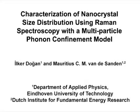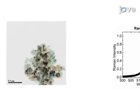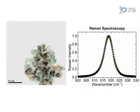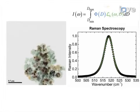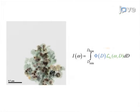The overall goal of this procedure is to use Raman spectroscopy to determine the nanoparticle size distribution in a fast, reliable, and non-destructive way. This is accomplished by first acquiring the Raman spectrum of nanoparticles of interest. The second step is to analyze the measurement data and locate the sub-distributions in it using the multiparticle phonon confinement model.